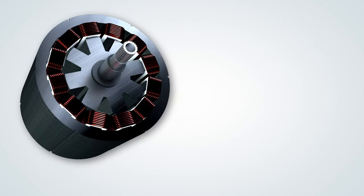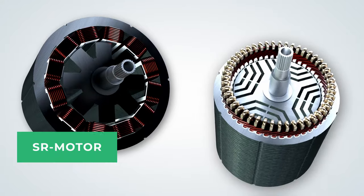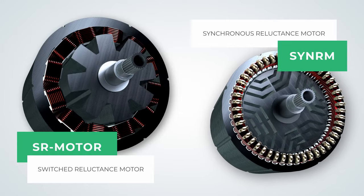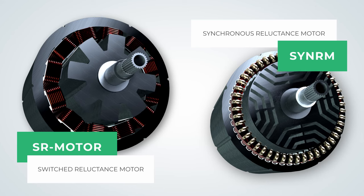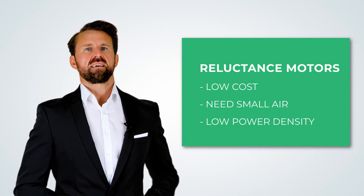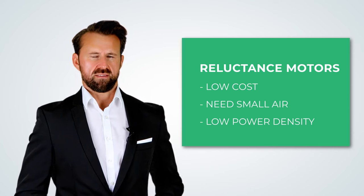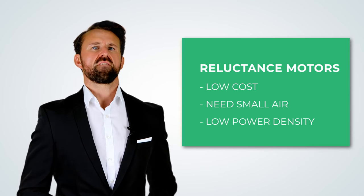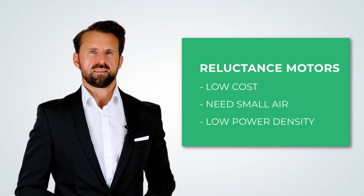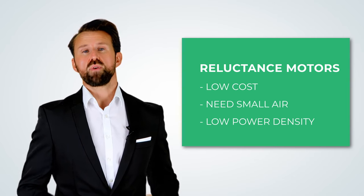The third type of synchronous motors are reluctance motors. They can be divided into switched reluctance motors and synchronous reluctance motors. We have made a dedicated video which explains the detailed differences and why the inverter is more expensive for some reluctance motors — you can find the link in the description. The main advantage of reluctance motors is that they have no magnets or windings in the rotor and are therefore very inexpensive. A disadvantage is that you need a very small air gap between the rotor and the stator to have good efficiency. The power density is also lower compared to motors with permanent magnets.